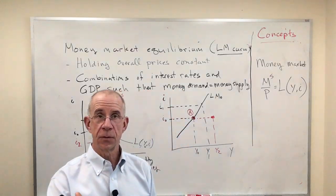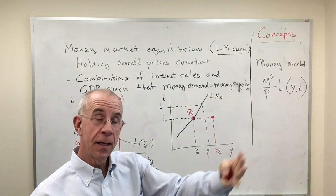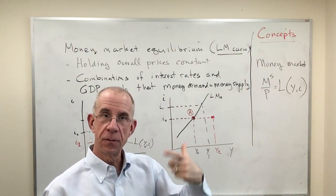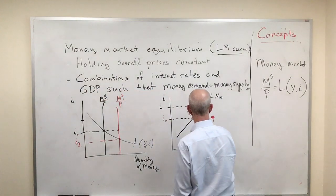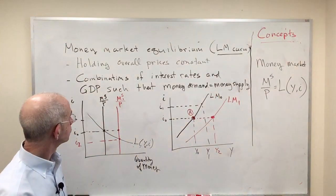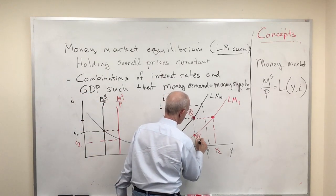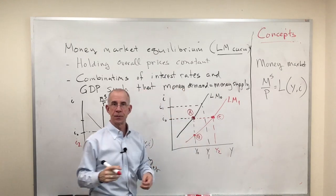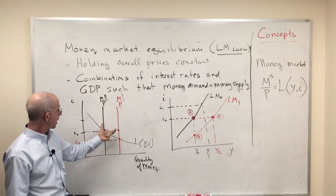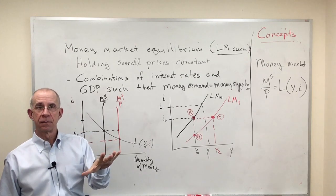If I've got higher national income, I'm going to want to hold more cash. So with the new level of the money supply and the initial interest rates, you'll have to have a higher GDP in order for the money market to clear. So the LM curve will tend to shift out. Now we started out where if you had the increase in the money supply with unchanging output, if interest rates fell to I2, supply would equal demand for money.